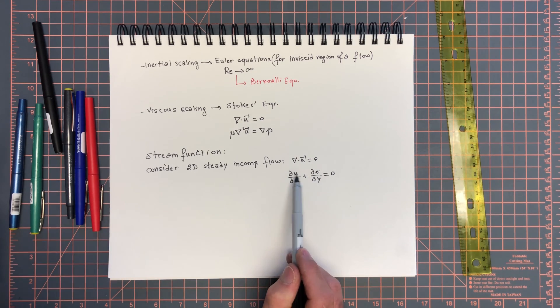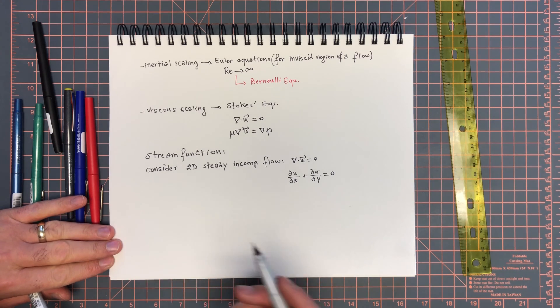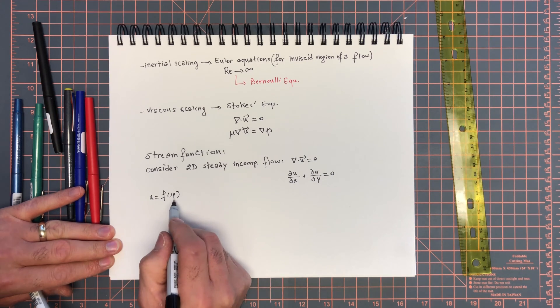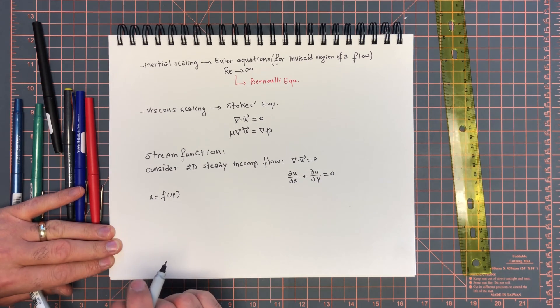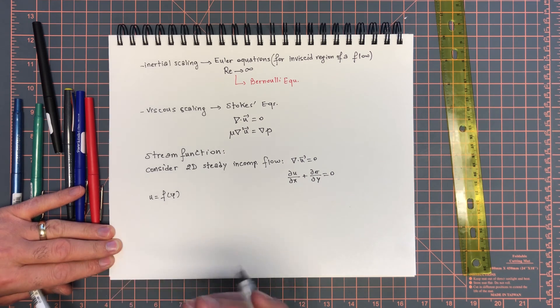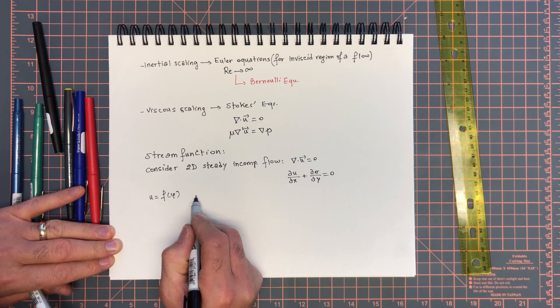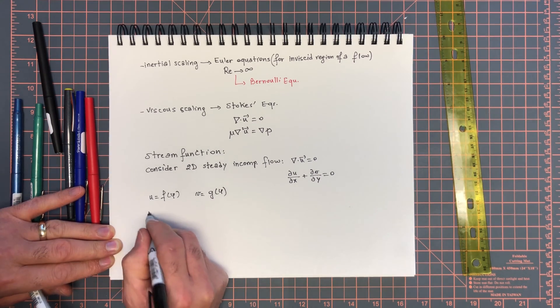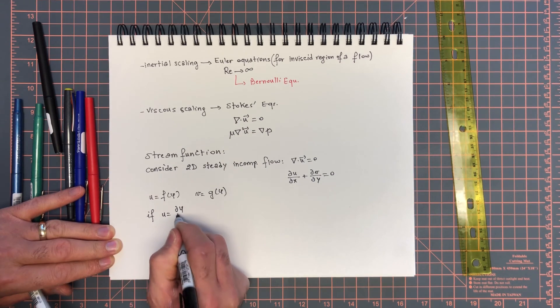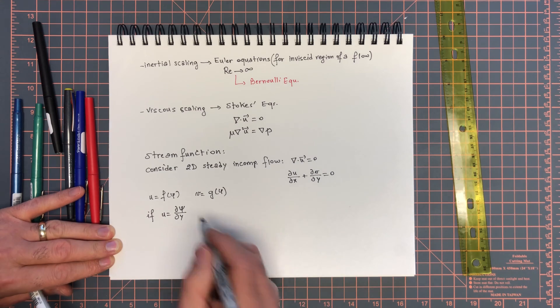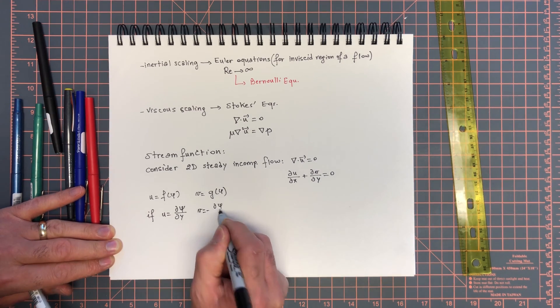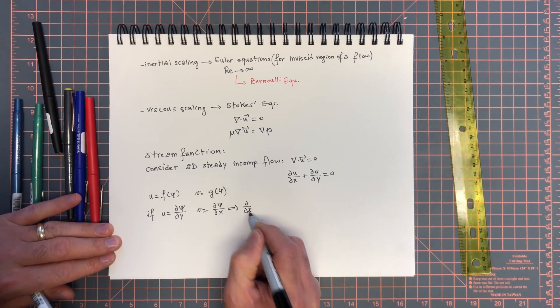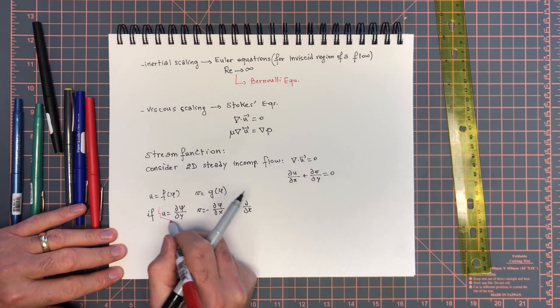If you can assume that u is some continuous function ψ - that will be known as the stream function, but we're not going to call it the stream function yet - we will prove that it is related to the streamlines. If v is equal to some g of ψ, then we can show that if u equals dψ/dy (remember ψ is continuous and differentiable) and v equals minus dψ/dx...